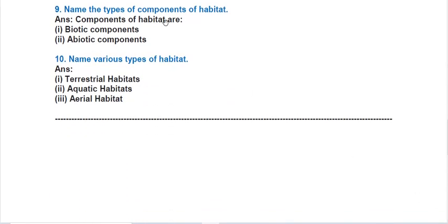Question nine: name the types of components of habitat. There are two components: biotic component and abiotic component. Biotic components are the living components like plants and animals. Abiotic components are the non-living things like air, water, and soil.